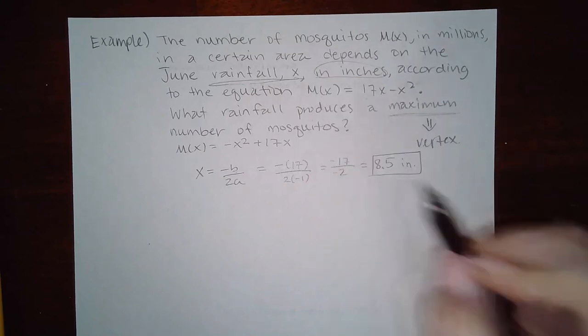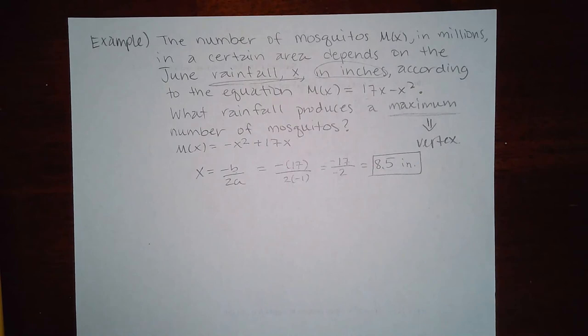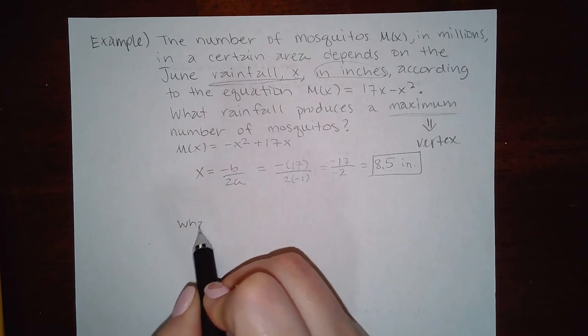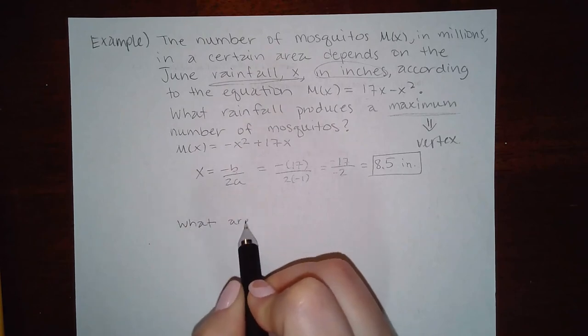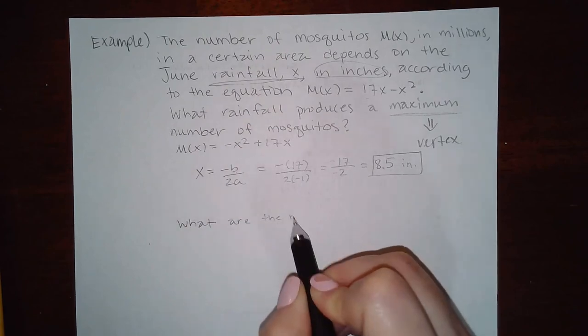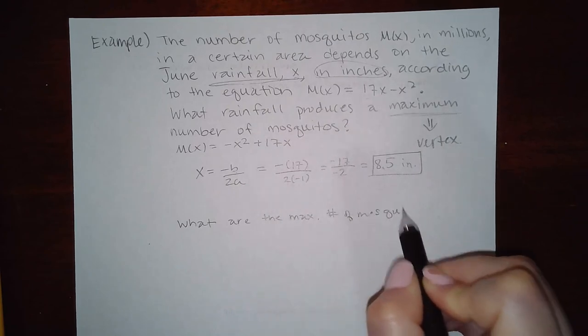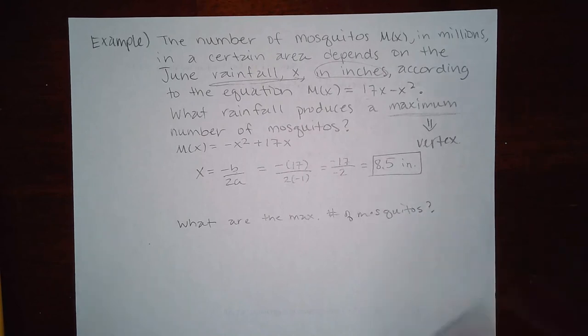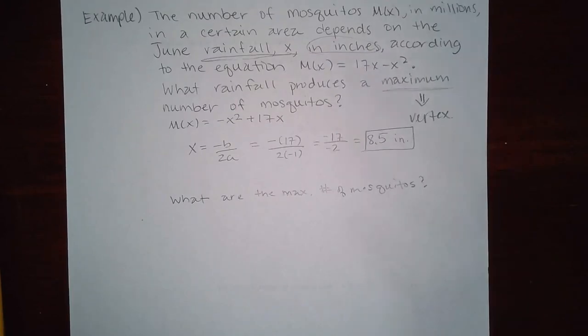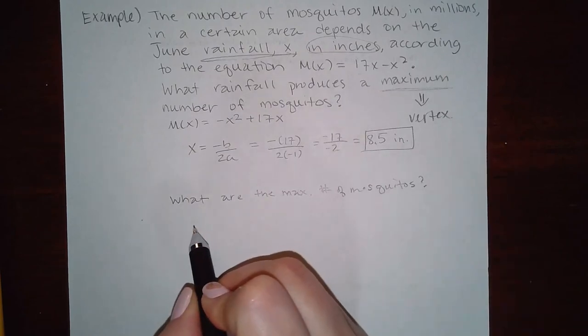So 8.5 inches of rainfall would produce the maximum number of mosquitoes. Now, what if they ask you for, what if they say, what are the maximum number of mosquitoes? It might have that additional part. If it does want to know how many mosquitoes there are when at this maximum time, then that means you actually have to plug in the 8.5.